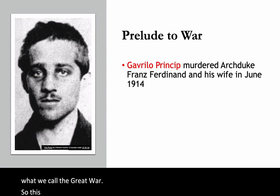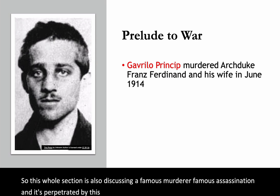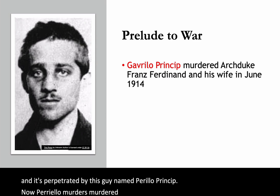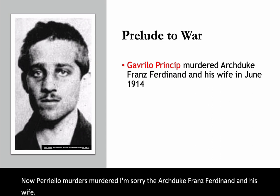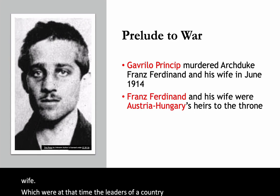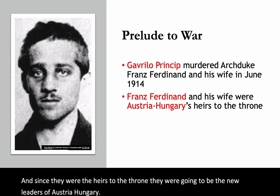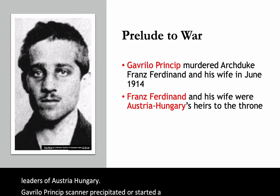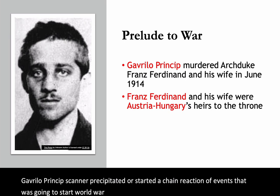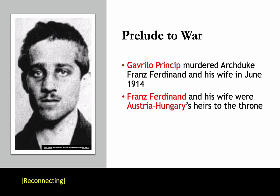This section also discusses a famous assassination perpetrated by a man named Gavrilo Princip. He murdered Archduke Franz Ferdinand and his wife, who were the heirs to the throne and future leaders of Austria-Hungary. Gavrilo Princip precipitated a chain reaction of events that started World War I. The reason he assassinated them is significant — in his mind, Austria-Hungary was going to conquer his country of Serbia, and being a nationalist, he didn't want this to happen. So he carried out his plan and basically started the Great War.